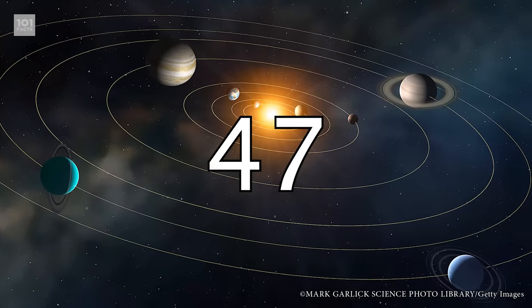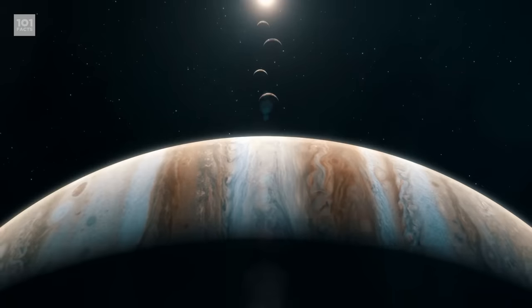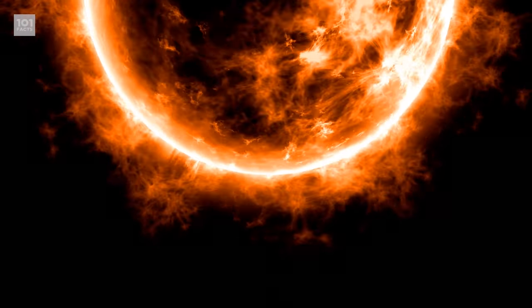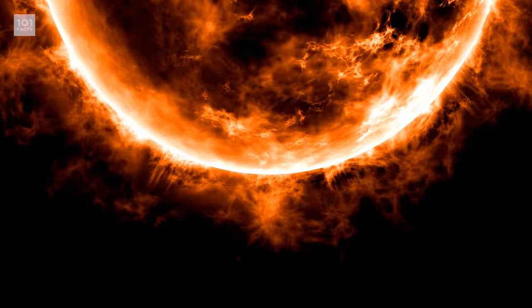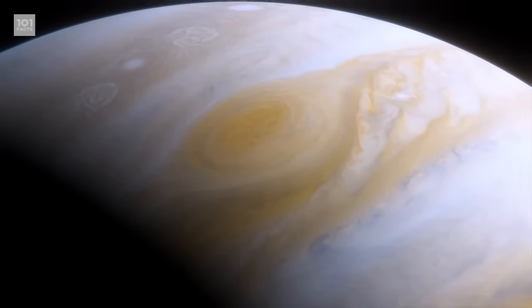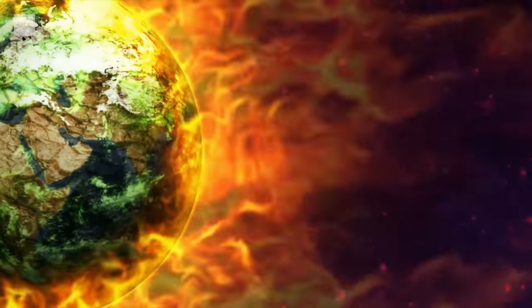Jupiter has sometimes been referred to as a failed star, but that's not quite accurate. Yes, it's massive, and it has an abundance of hydrogen and helium like our sun. Jupiter just doesn't have enough mass to trigger the fusion reaction that would make it a star. Probably a good thing for us, though. Earth doesn't need any more heat.